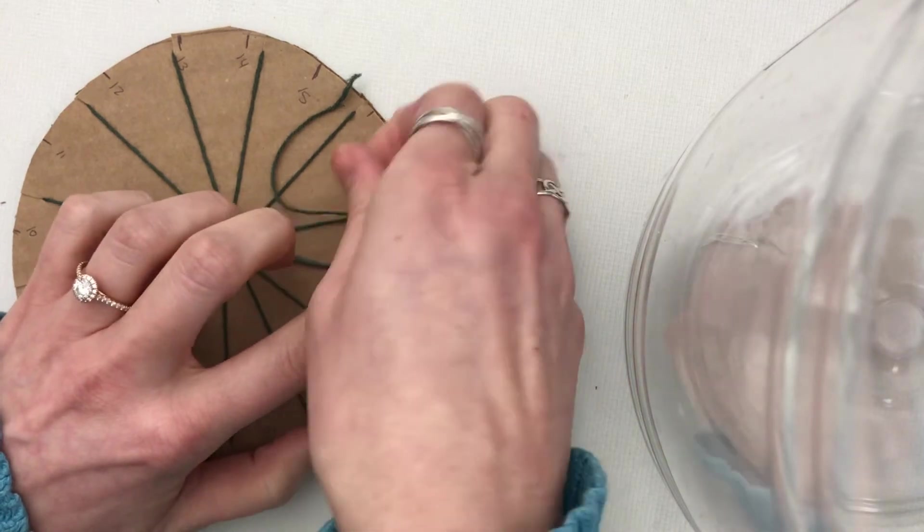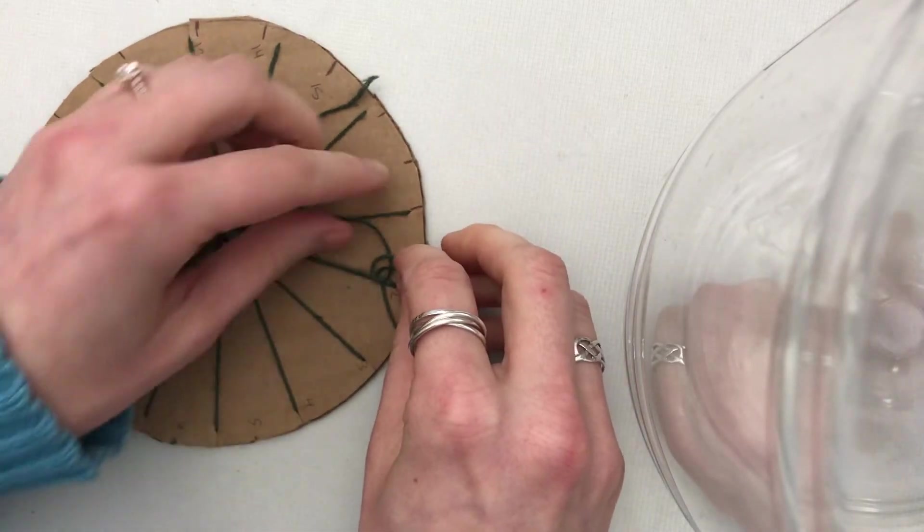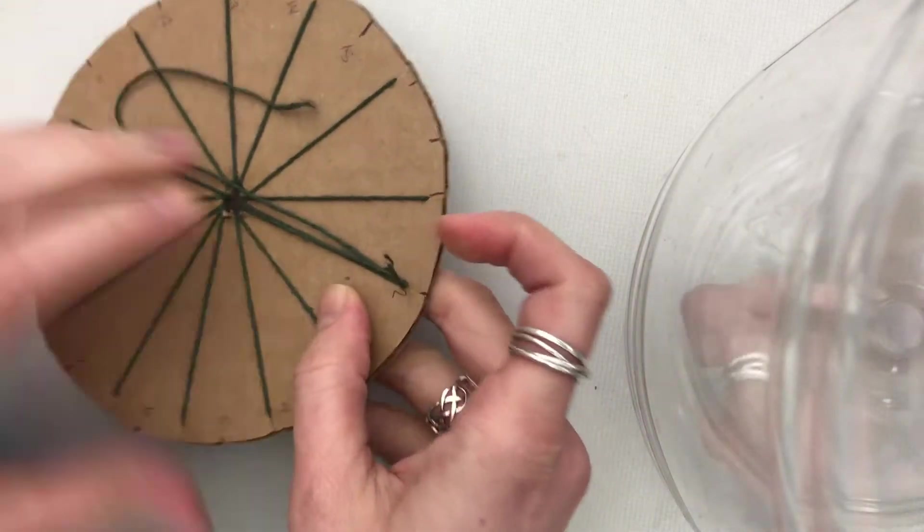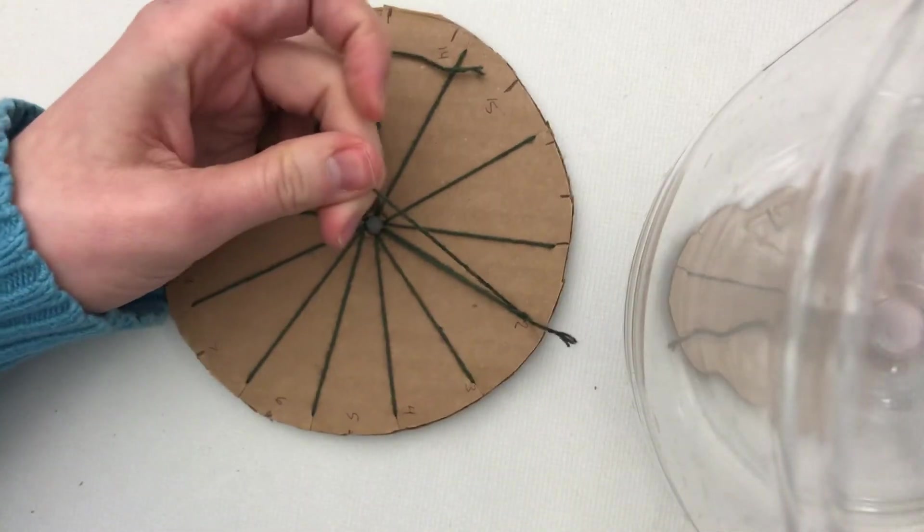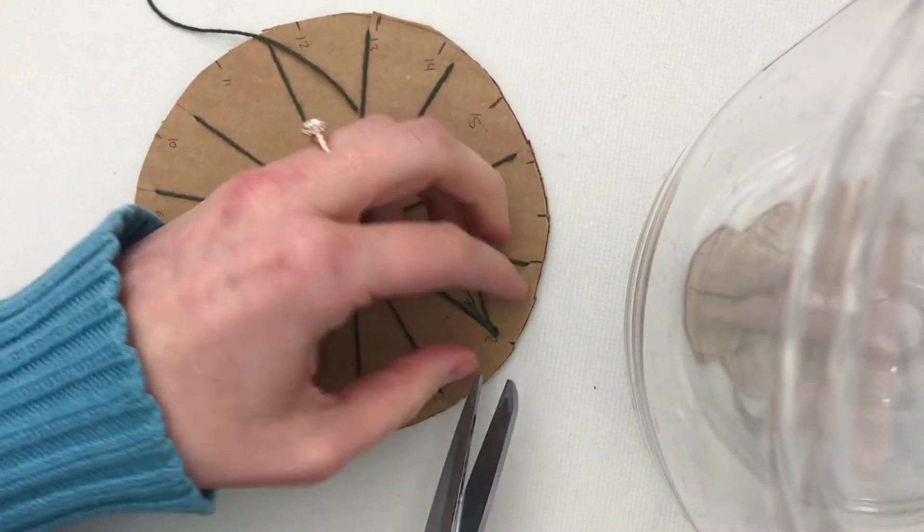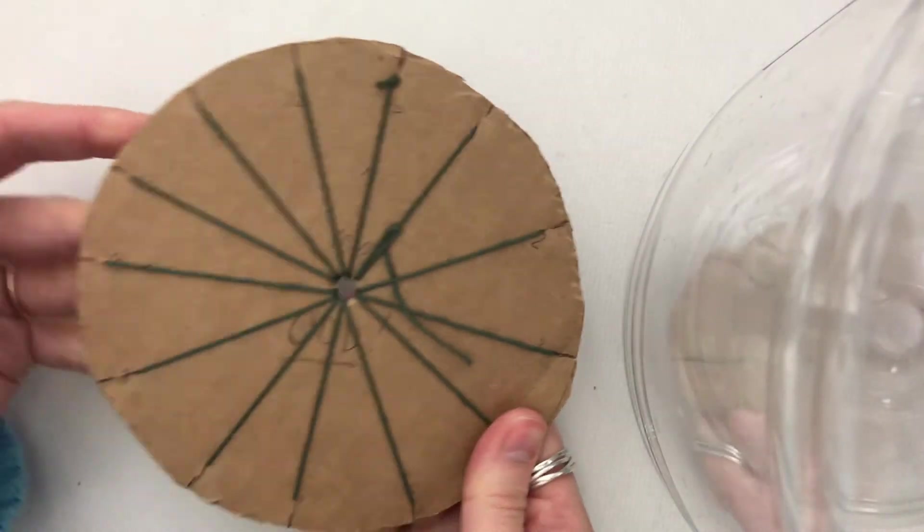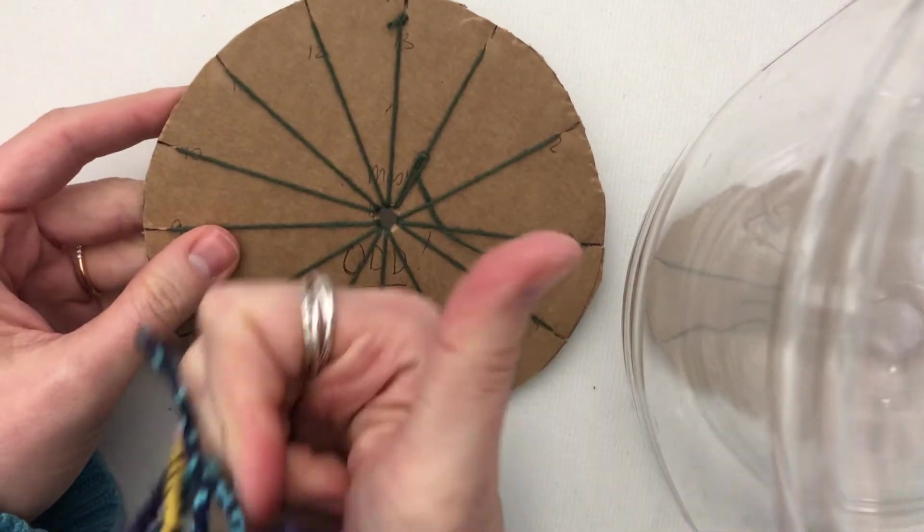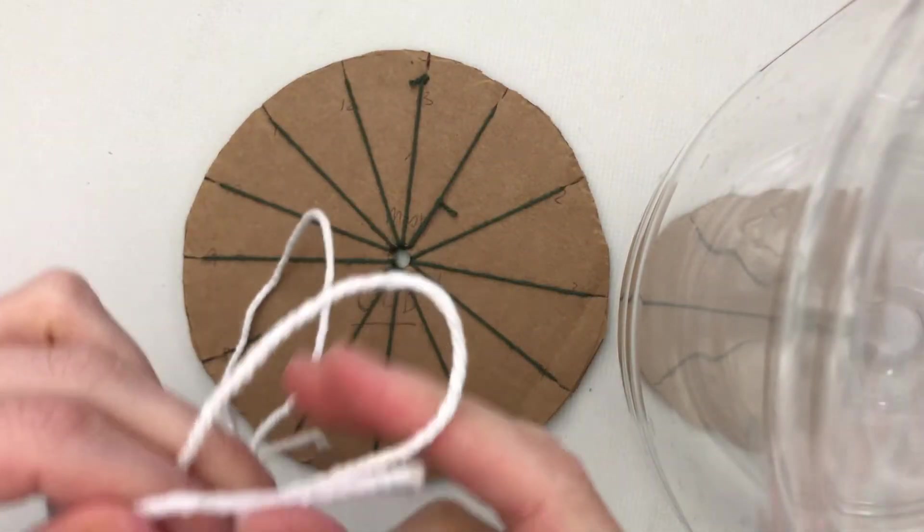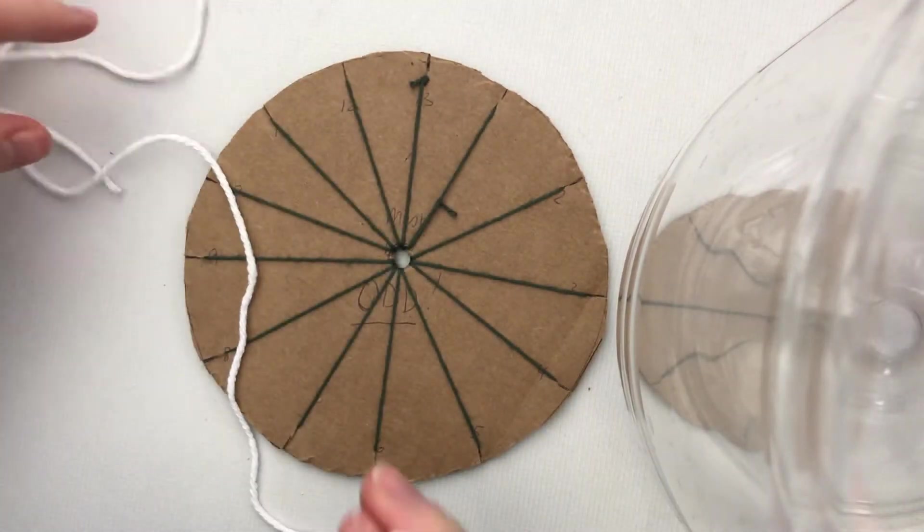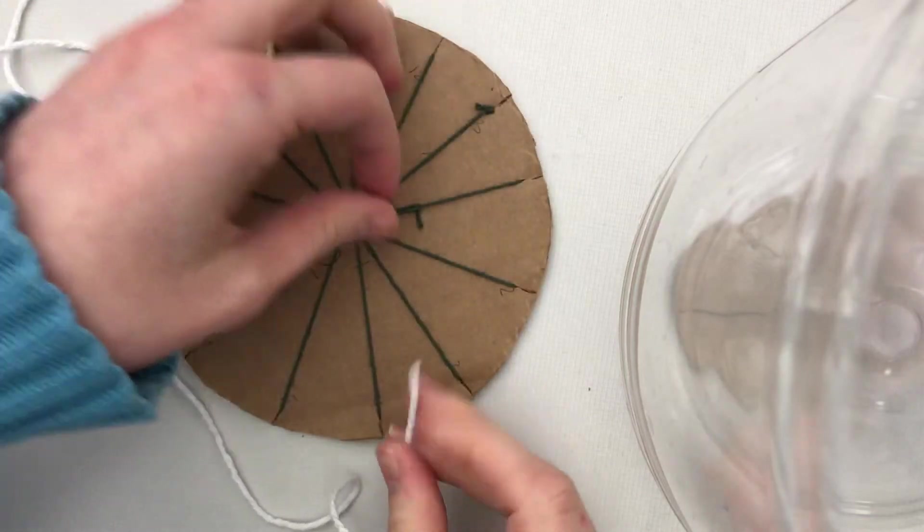It will make a difference later on. Then you can trim off any extra string that you may have. Now you can start with your white as your center—the brightest part of your sun—or yellow, whatever choice you have.